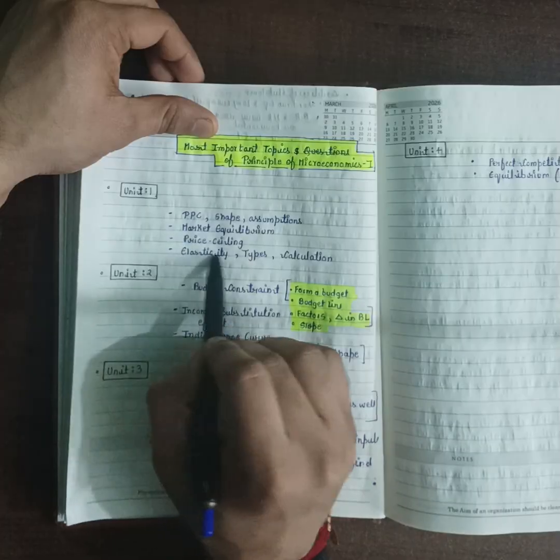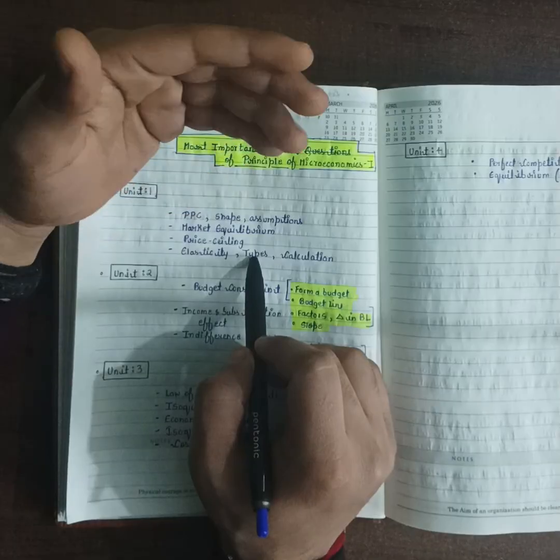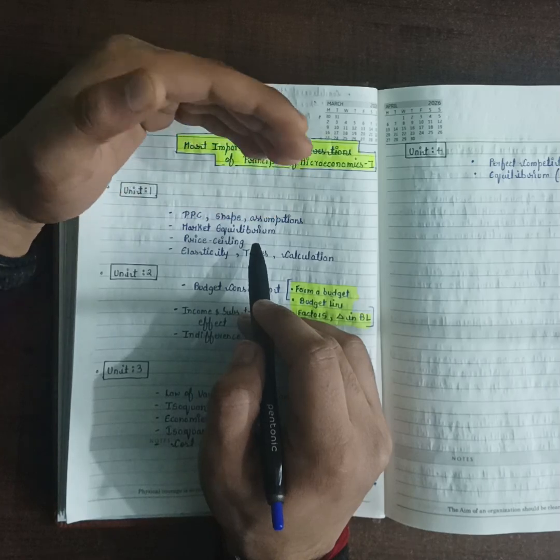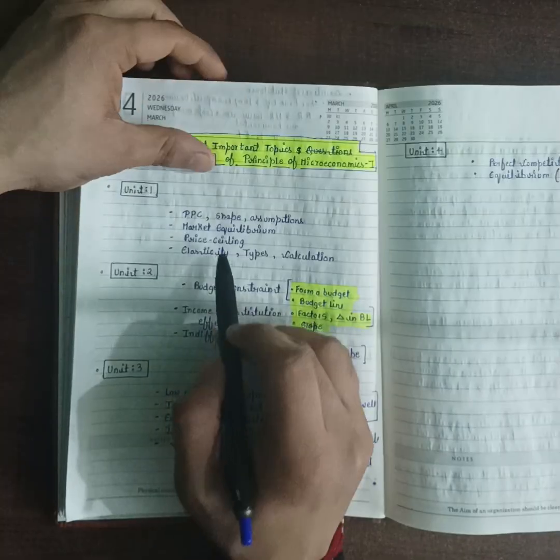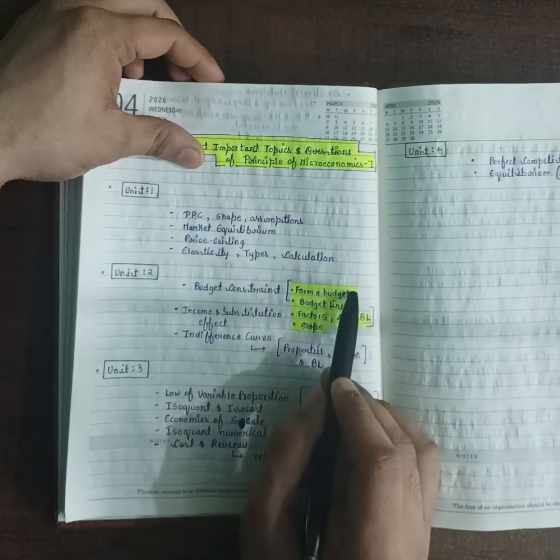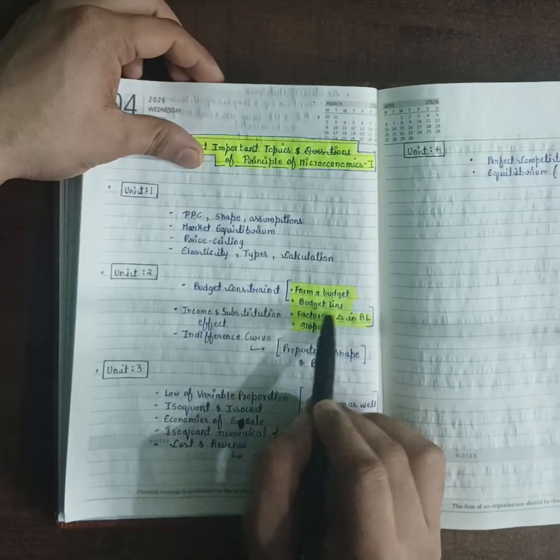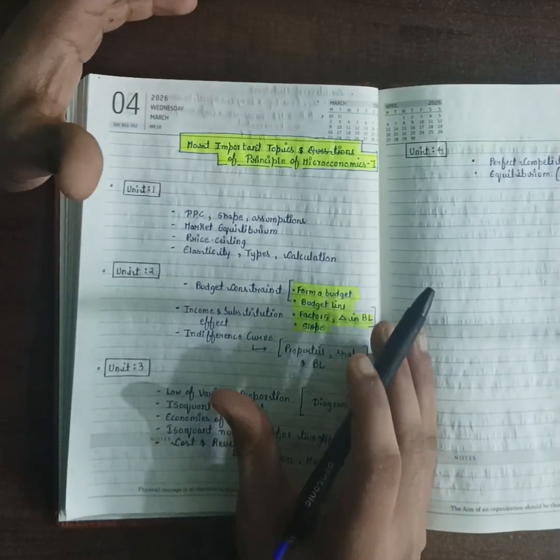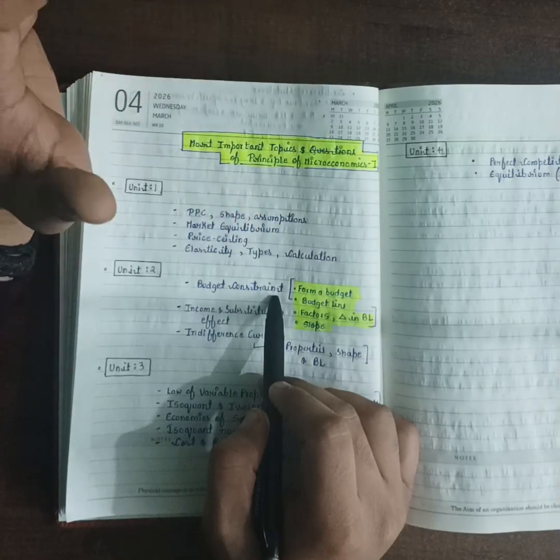There are two bifurcations: first on the basis of components like price elasticity, cross elasticity, and then perfect elasticity, imperfect elasticity. Within Unit 2, budget constraint - I highlighted whatever topics you must cover. First, form a budget; second, budget line; third, factors which affect the budget line; fourth, change in budget line; fifth, slope. These many subtopics are within the budget constraint concept.